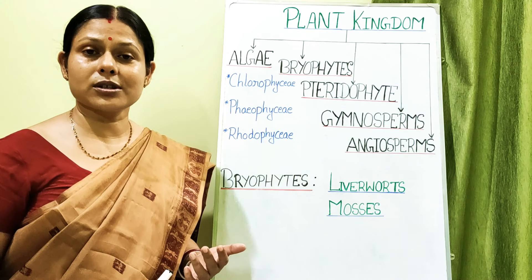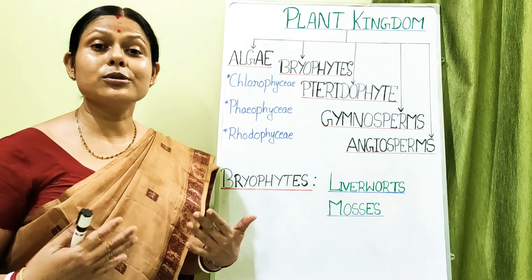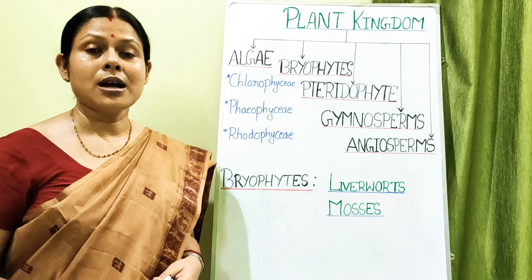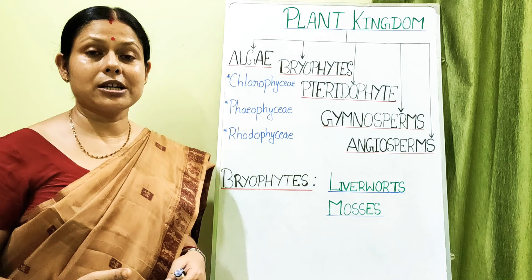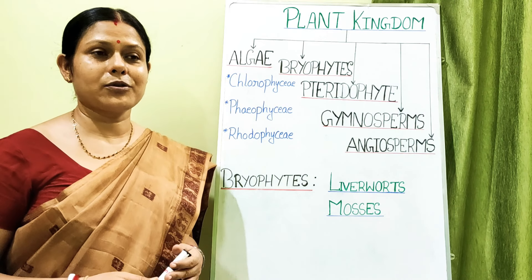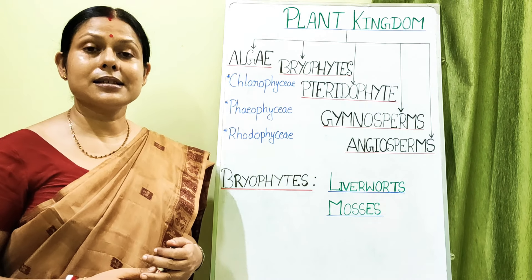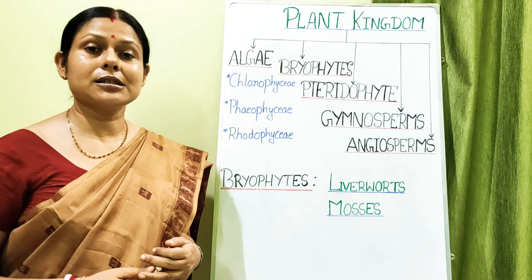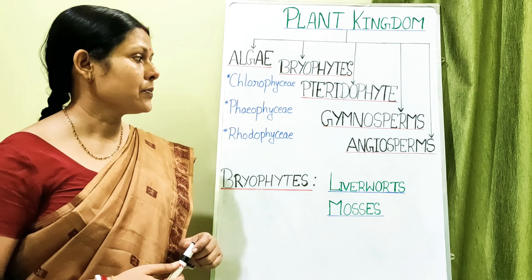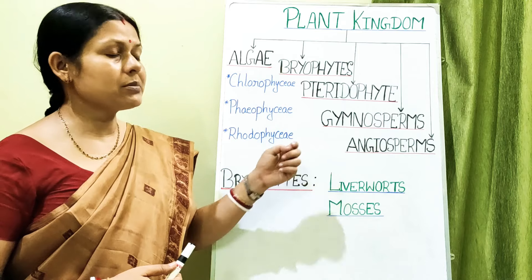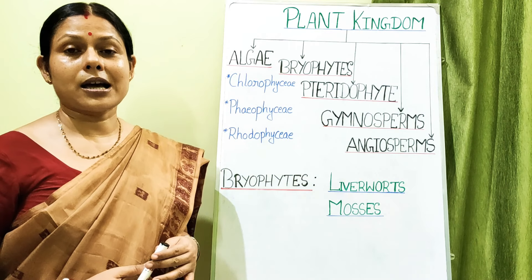Since cryptogams don't have flowers, they don't bear seeds. So how do they reproduce? They reproduce by means of vegetative propagation, asexual reproduction, and sexual reproduction, which leads to the formation of spores but not seeds. Gymnosperms and angiosperms, on the other hand, are called phanerogams — flowering plants that bear seeds.